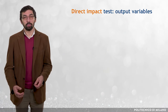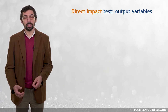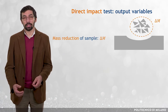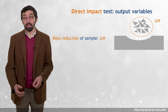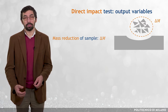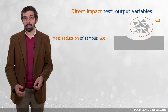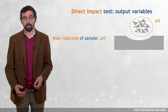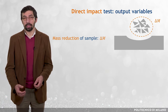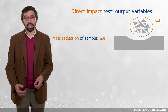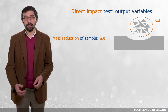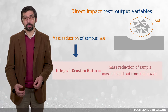The primary output variable is the mass reduction of the sample, equal to the mass of removed material. This variable is typically normalized by the mass of solids exiting the nozzle, obtaining the dimensionless integral erosion ratio.